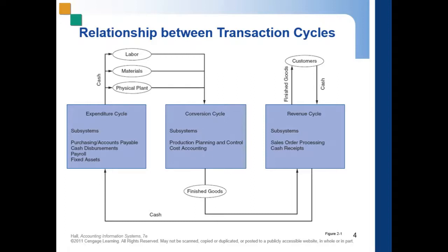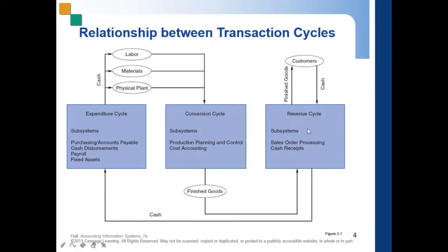Once you have your output — which is your finished goods — those finished goods can be sold to customers. When customers buy or pay cash, that event starts your revenue cycle.